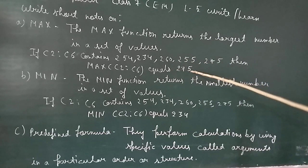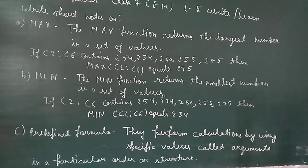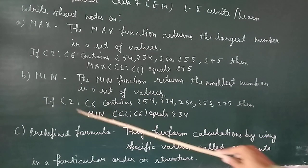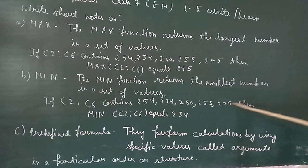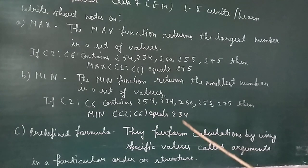MIN - the minimum function is the opposite. The MIN function returns the smallest number in a set of values. Same procedure: if you have C2 to C6 with the same numbers given to you, the minimum will give you the smallest number.